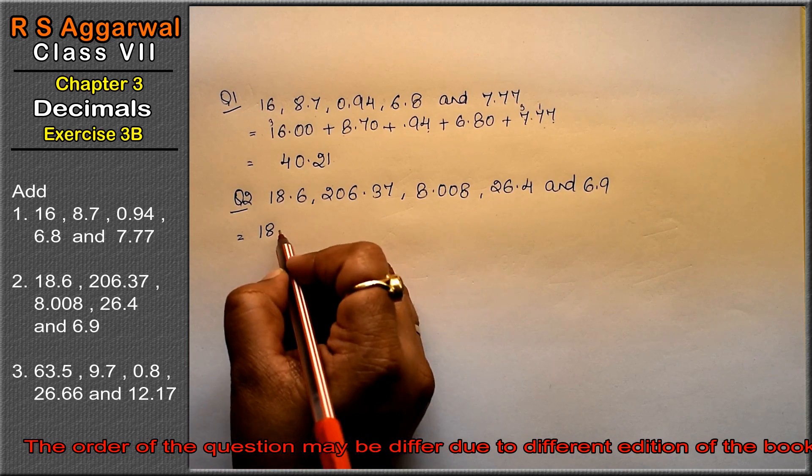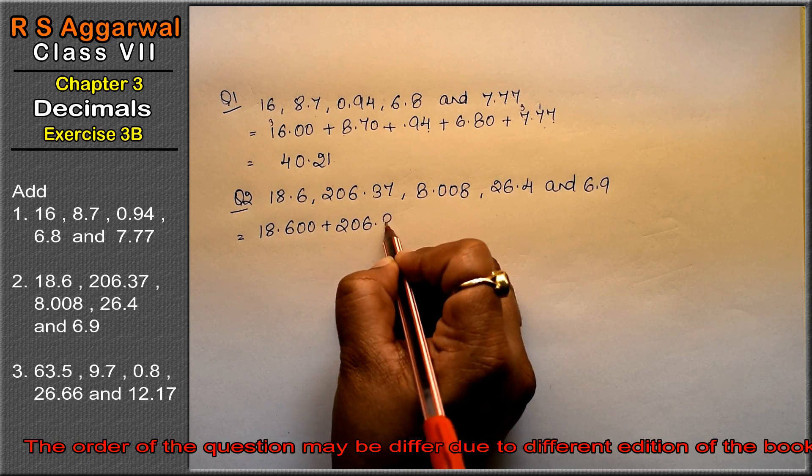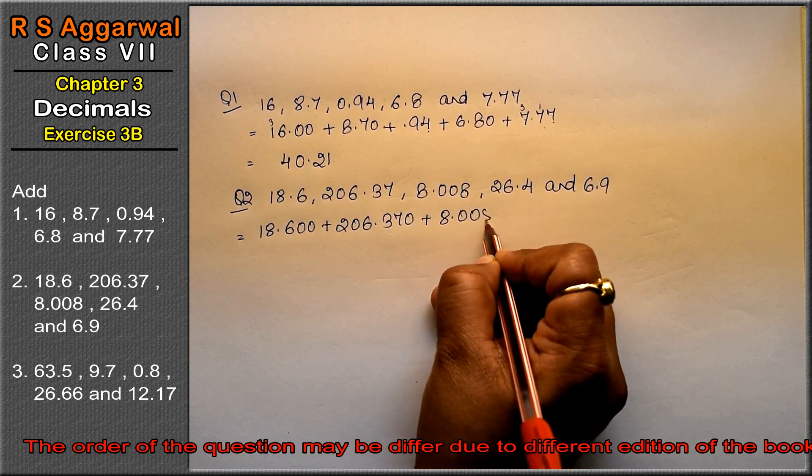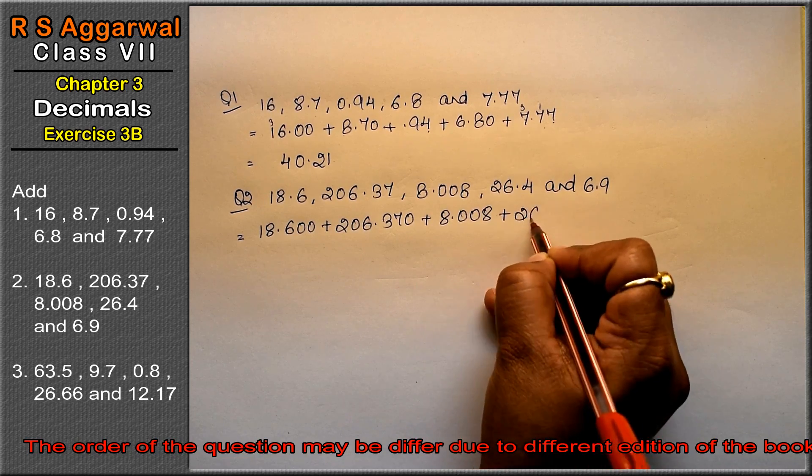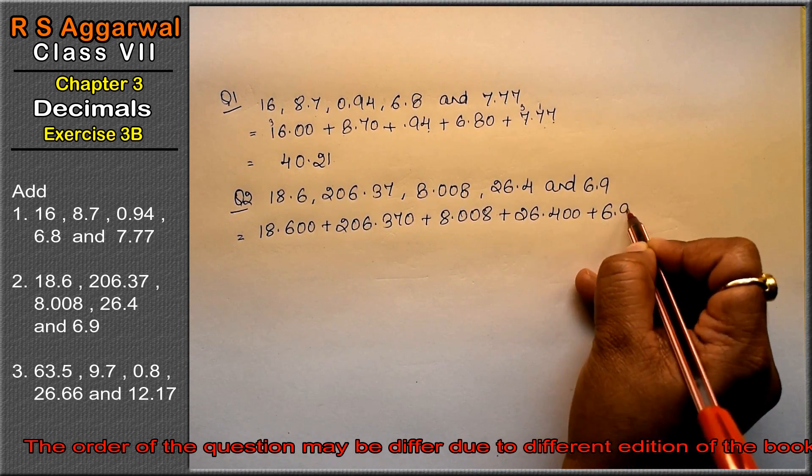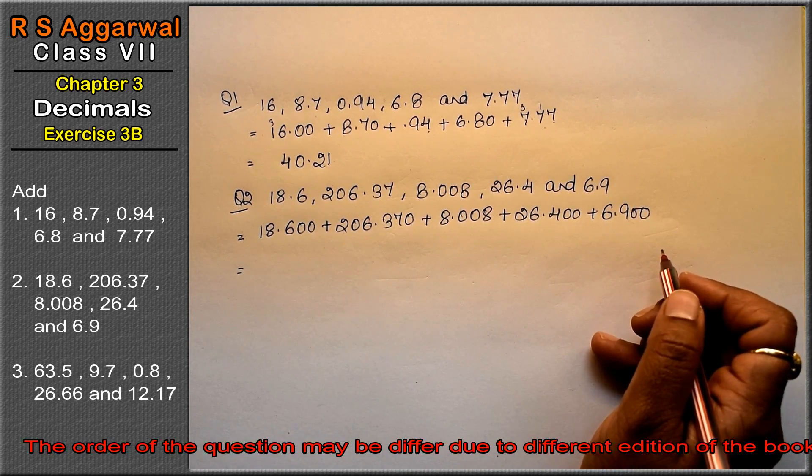So, let's do this like fraction in like fraction. Maximum, see, there are three digits.